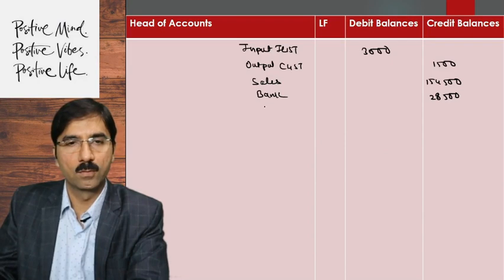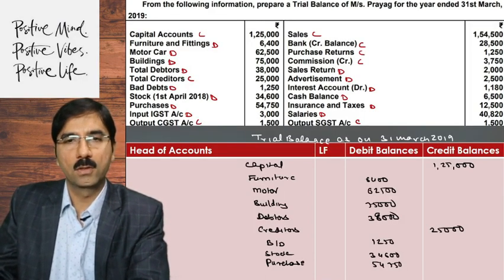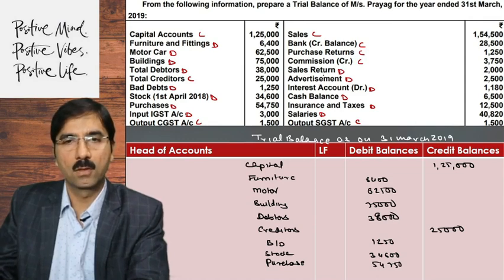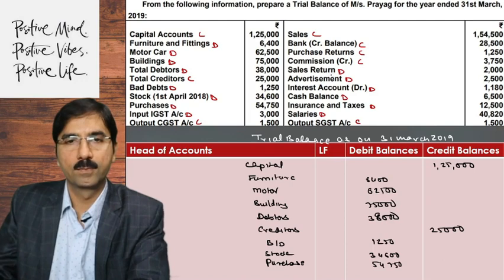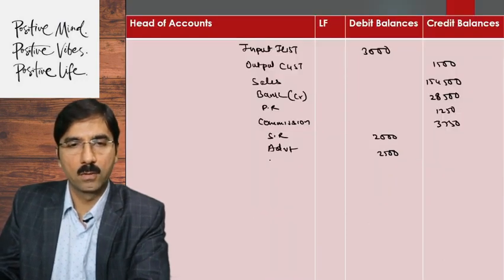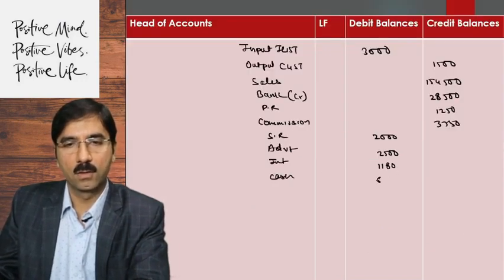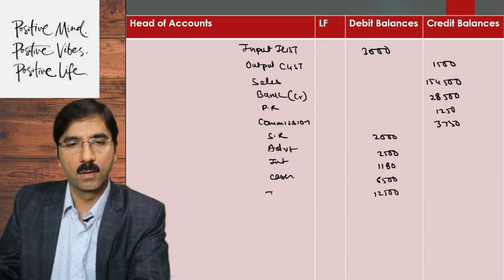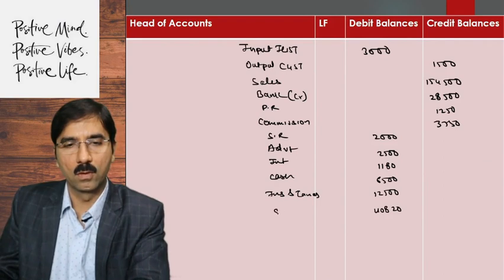Purchase Return 1,250 credit. Bank loan credit balance. Commission 3,750 credit. Sales Return 2,000 debit. Advertisement 2,500 debit. Interest 1,180 debit. Cash 6,500 debit. Insurance and Taxes. Salary 40,820 debit.